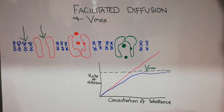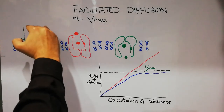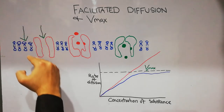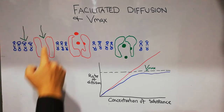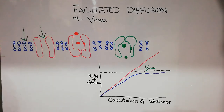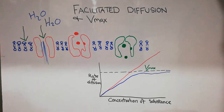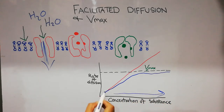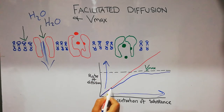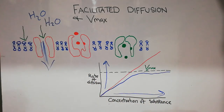This has been explained with the help of a graph. When the concentration of substances to be transferred from outside to inside increases, the rate of diffusion increases. For example, as water concentration increases outside the cell, the rate of diffusion through its channel increases continuously. This is shown in the graph: the rate of diffusion continuously increases with the amount of substance to be transferred.